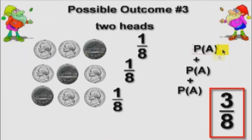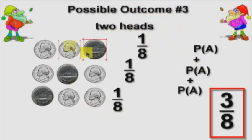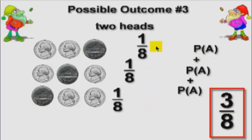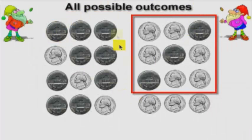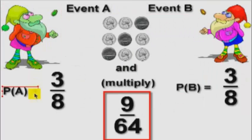Possible outcome number three is they can get two heads, in either one of these three fashions. It's this outcome, or this outcome, or this outcome — you add up the individual probabilities and get three out of eight. We want P of A and P of B, which means multiply, so again we get nine out of sixty-four.